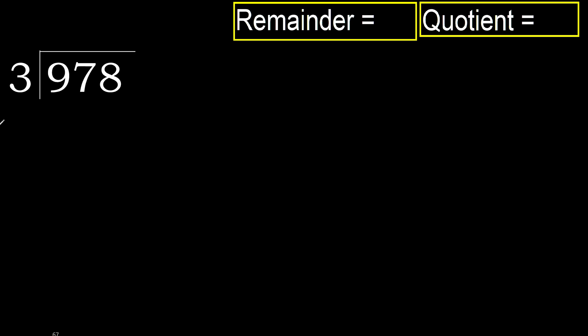978 divided by 3. 9 is not less, therefore work with 9. 3 multiplied by which number is nearest to 9 but not greater? 3 multiplied by 4 is 12, which is greater. 3 multiplied by 3 is 9, which is not greater.